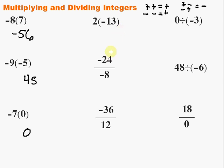How about this one? We have 2 times negative 13. A positive times a negative, I'm not going to worry about those yet. Let's just take care of the numbers. 2 times 13 is 26. A positive times a negative is going to give me a negative. So that's all multiplication stuff.